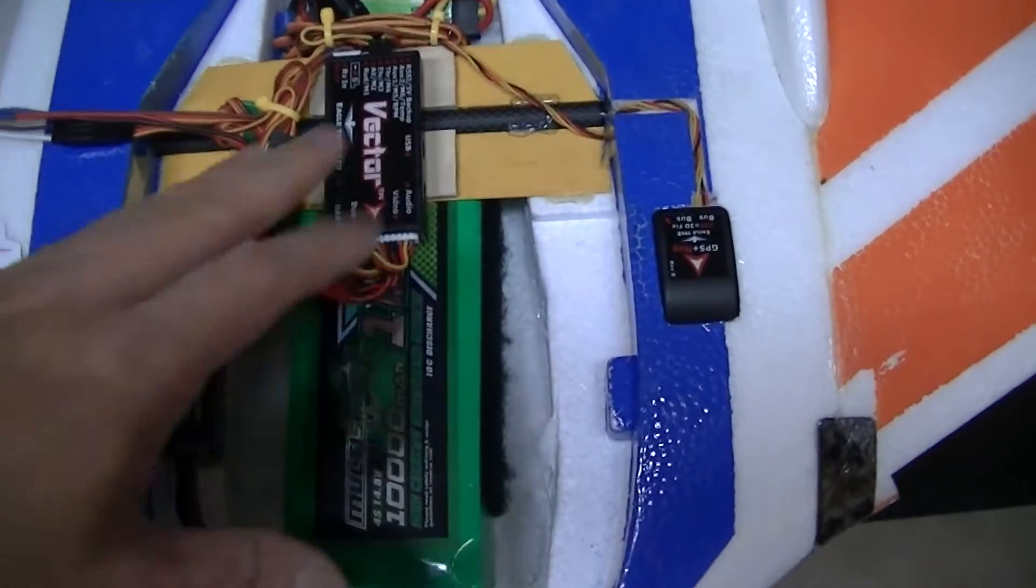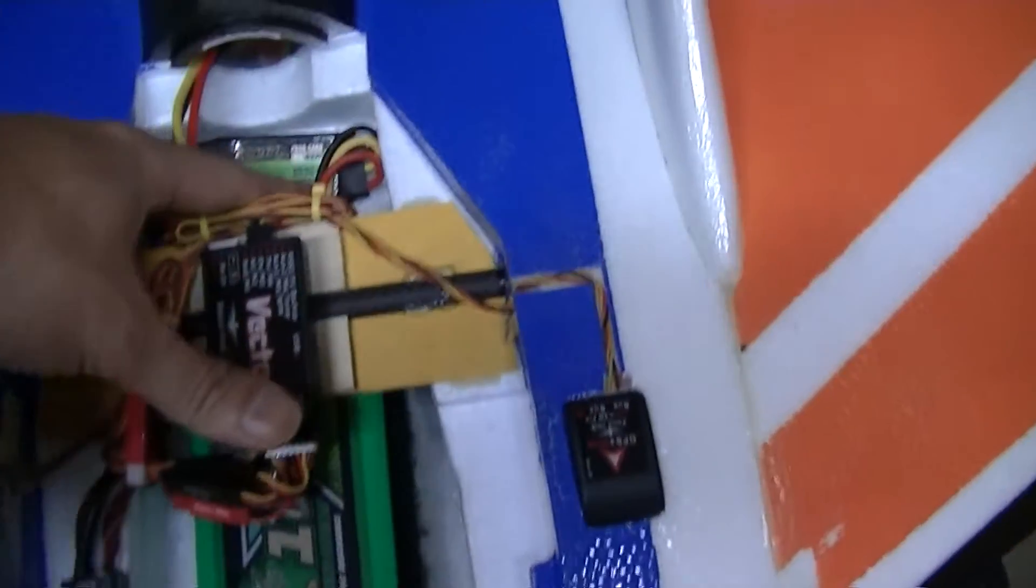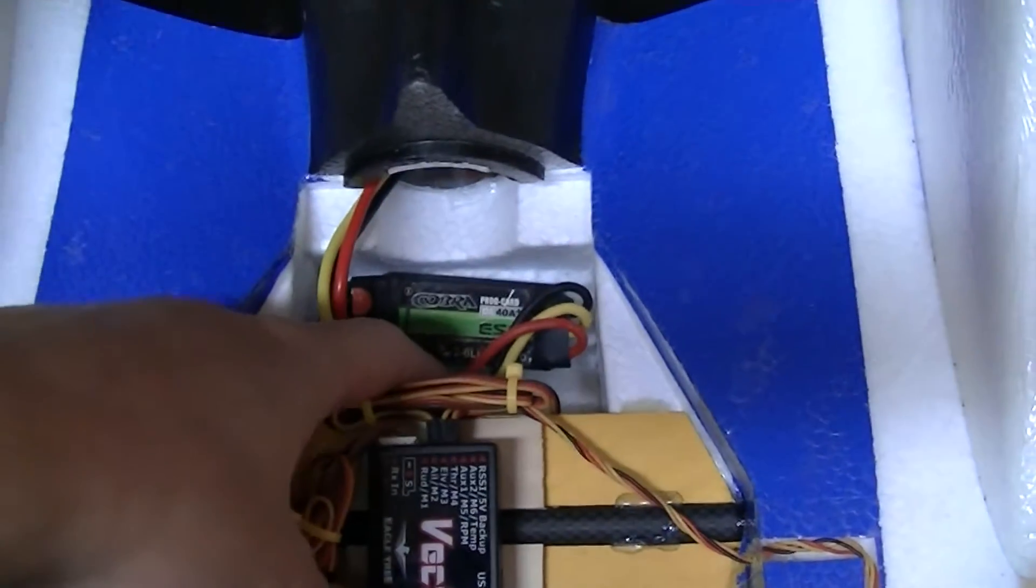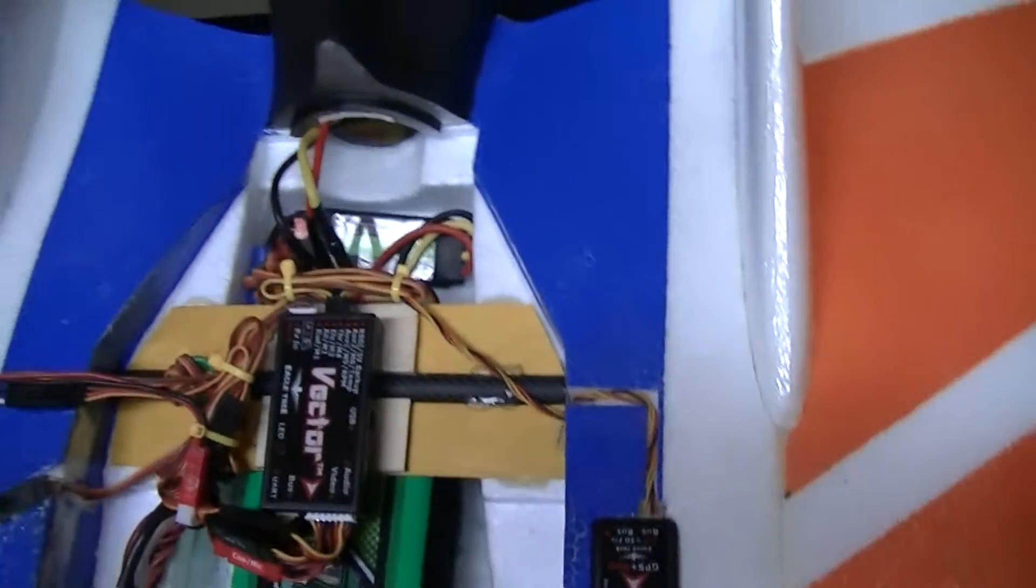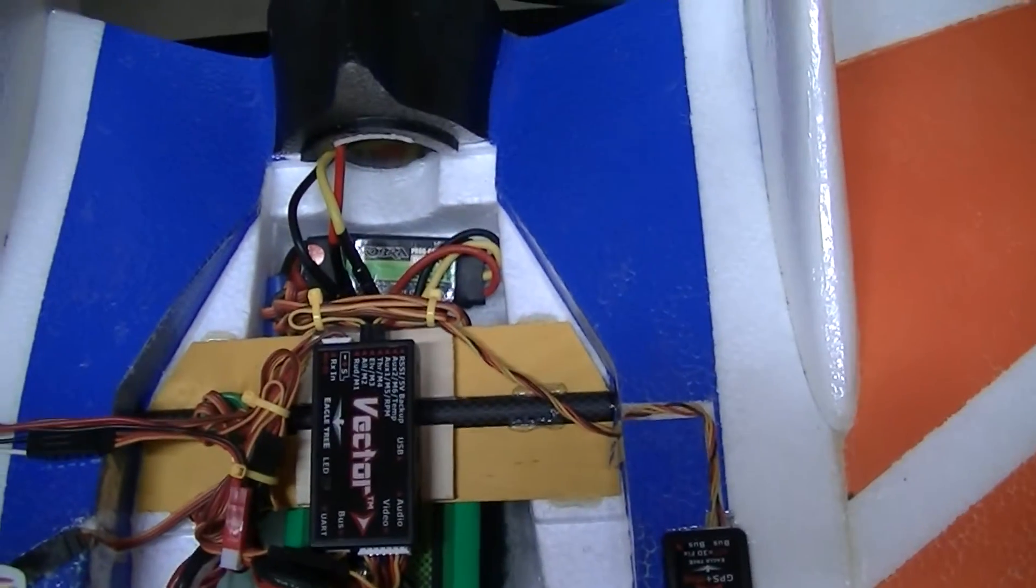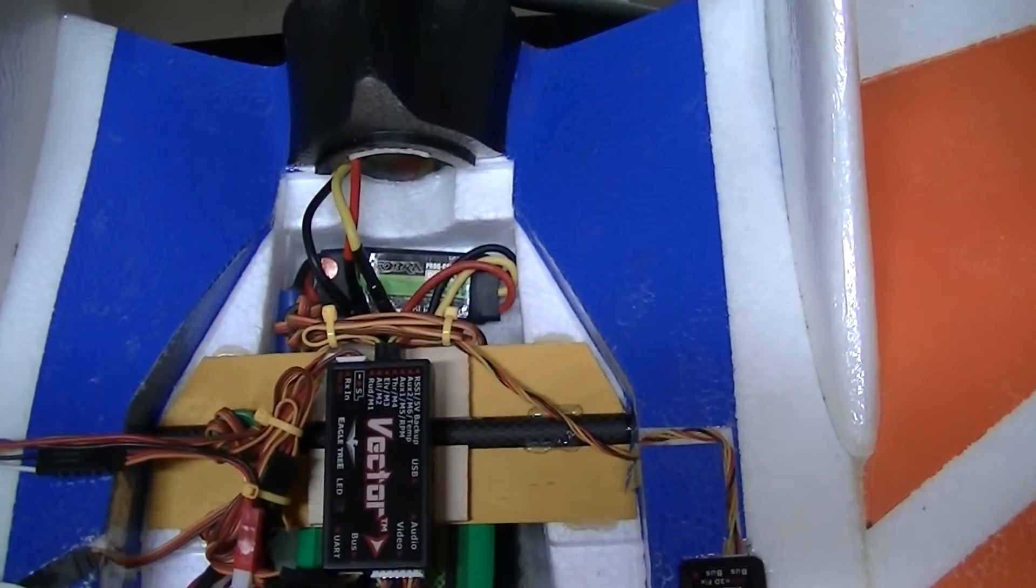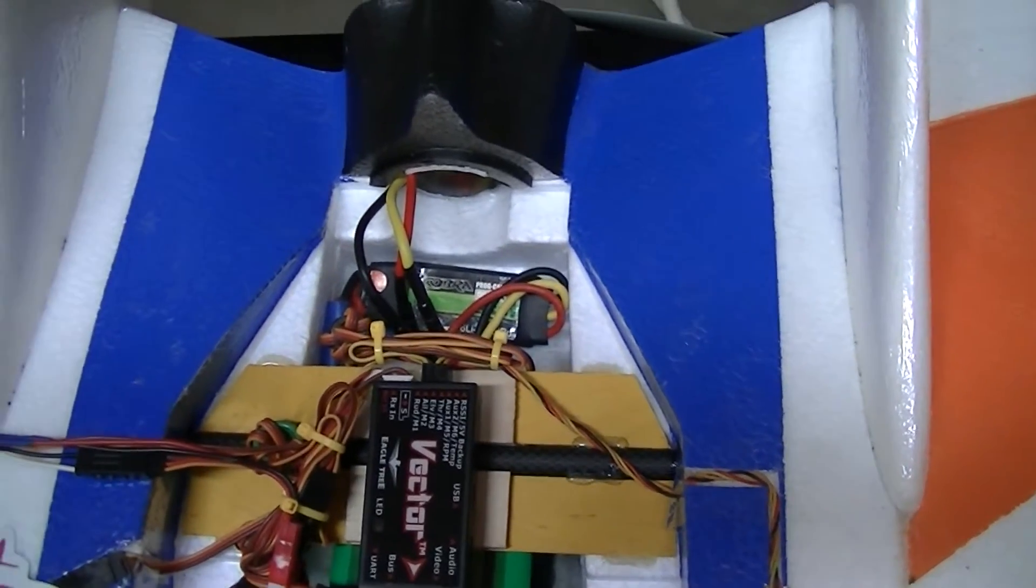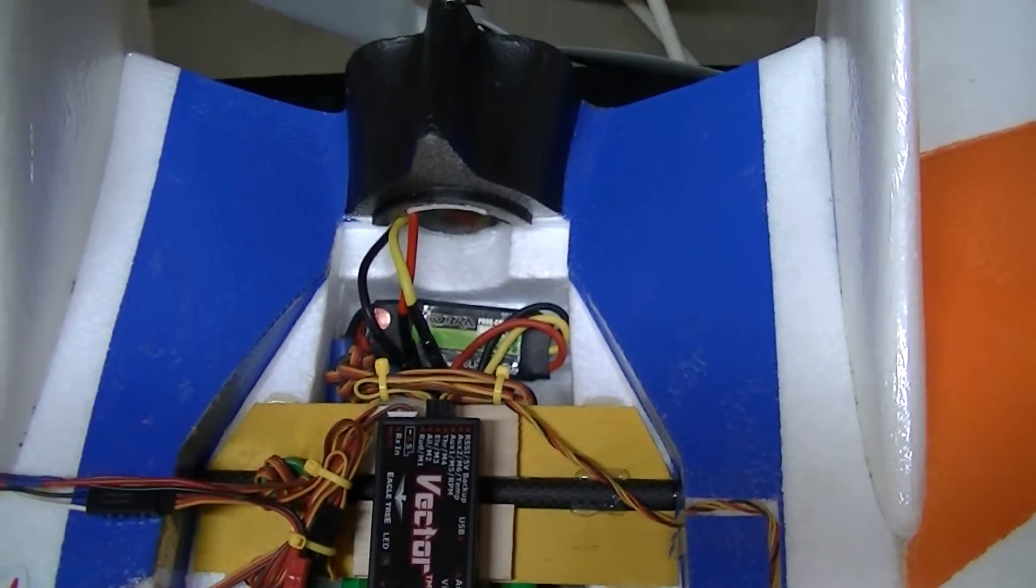Now for the electronics, again I'm using an Eagle Tree Vector as my autopilot and a 40 amp Cobra ESC. So from my experience, 40 amp is more than enough to handle the amp draw on takeoff. And if you want to do some crazy flying vertical, I haven't really had any experience where I pulled more than 25 amps on this airframe.